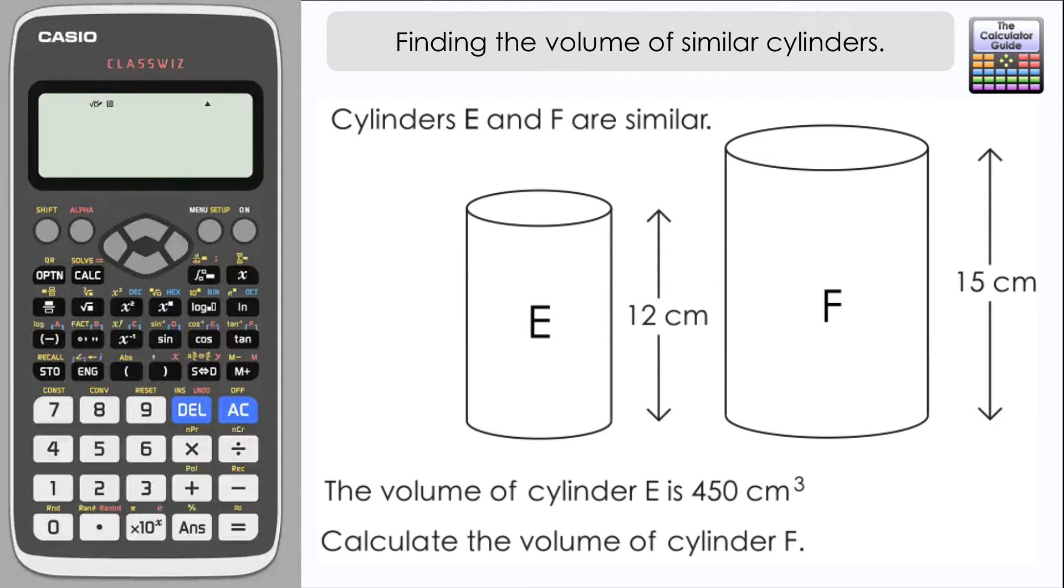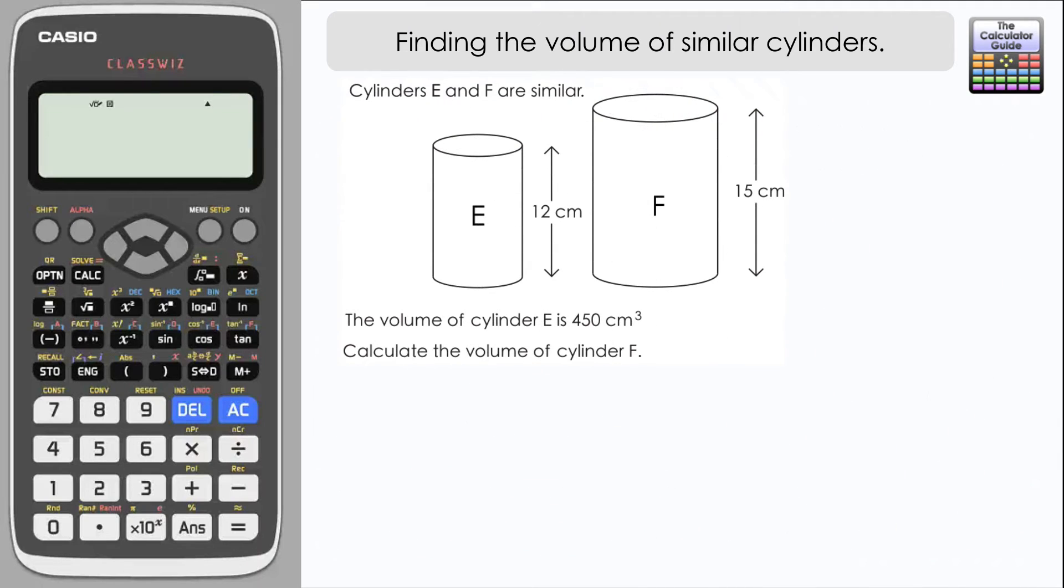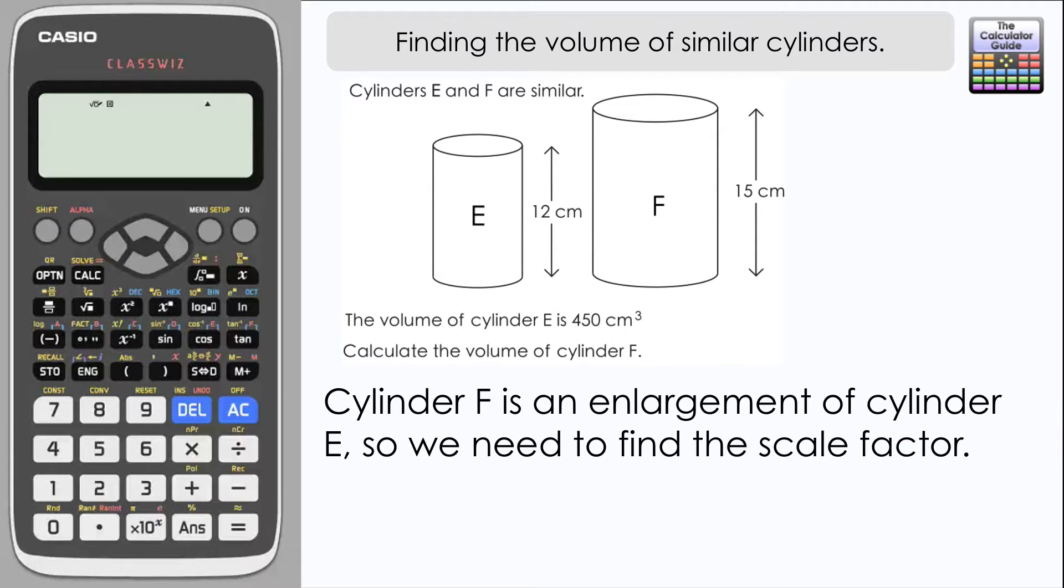The volume of cylinder E is given as 450 centimeters cubed and we need to calculate the volume of cylinder F. Cylinder F is an enlargement of cylinder E.